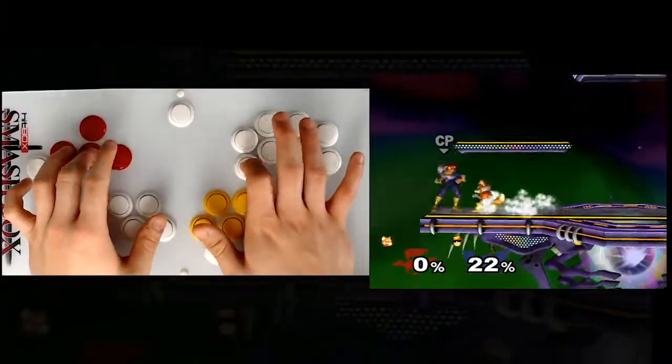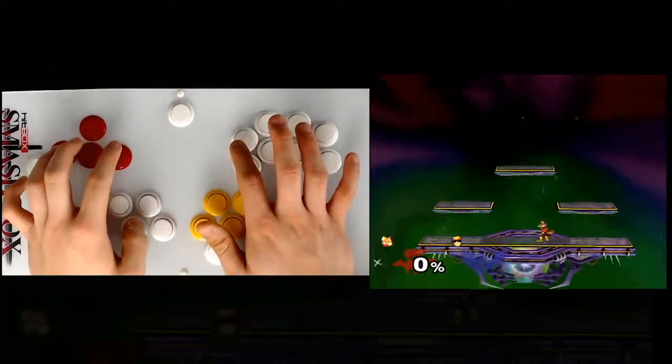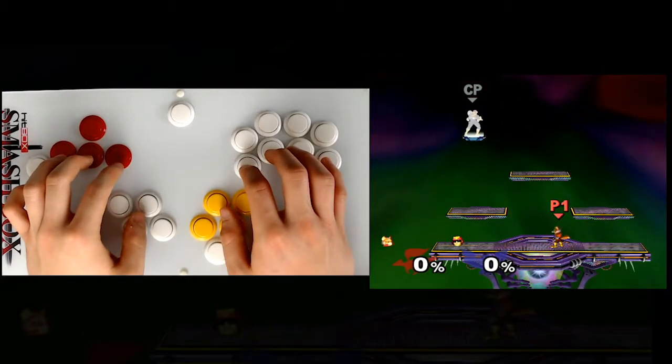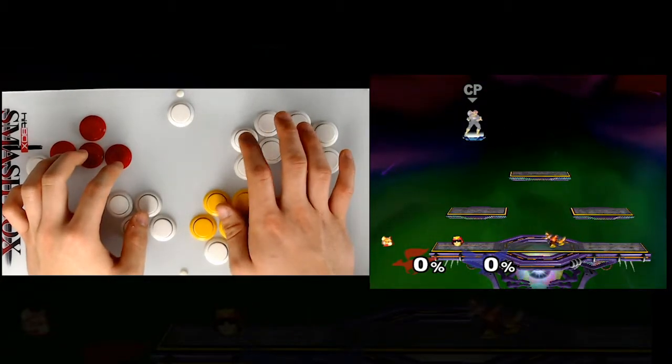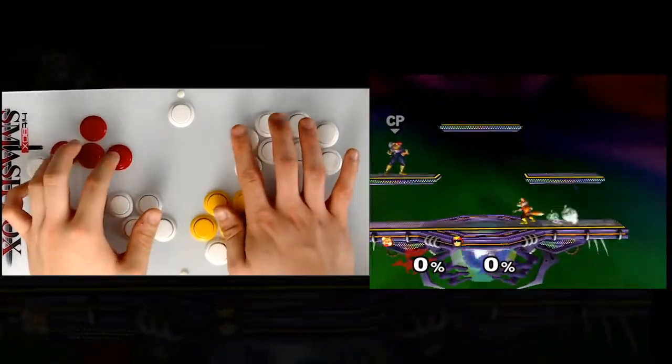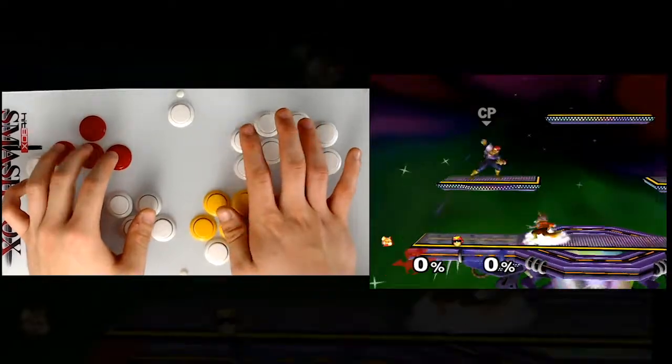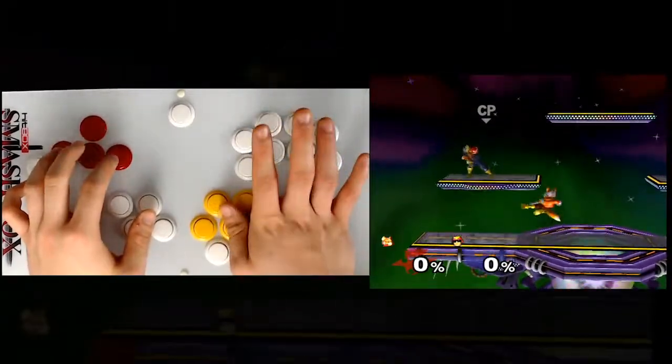But let's say I was still maining Captain Falcon. As a Falcon player, I don't need the B, so having it on my index finger would be a complete waste. So I would definitely switch it out for Z because I care most about getting perfect jump cancel grabs.